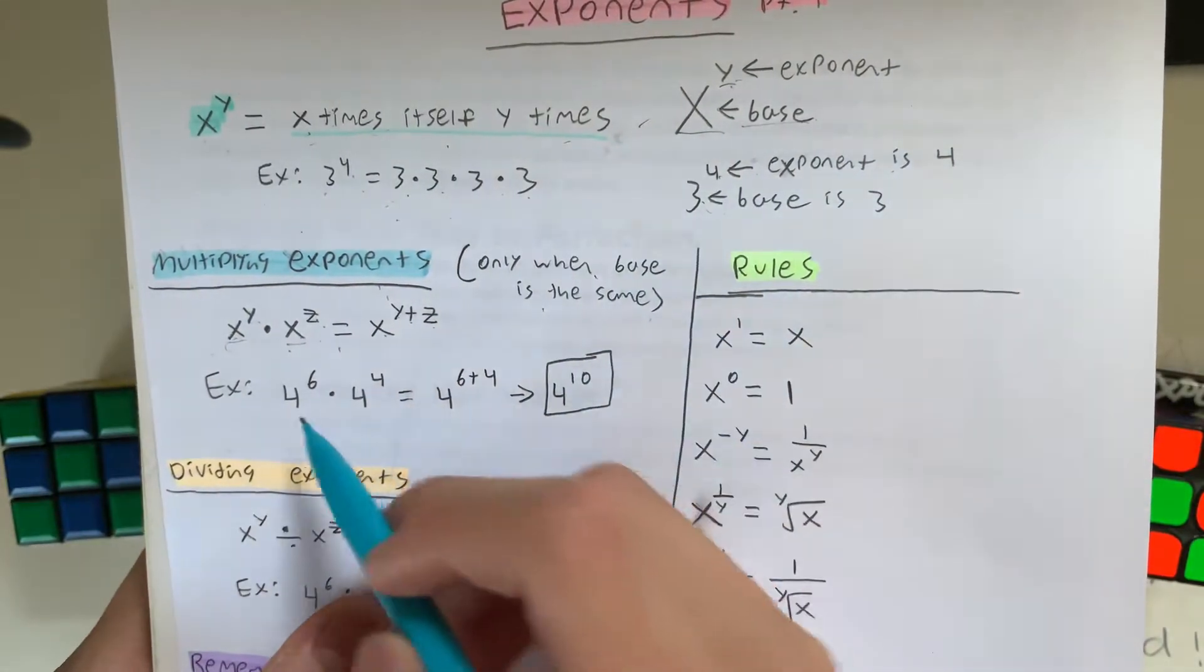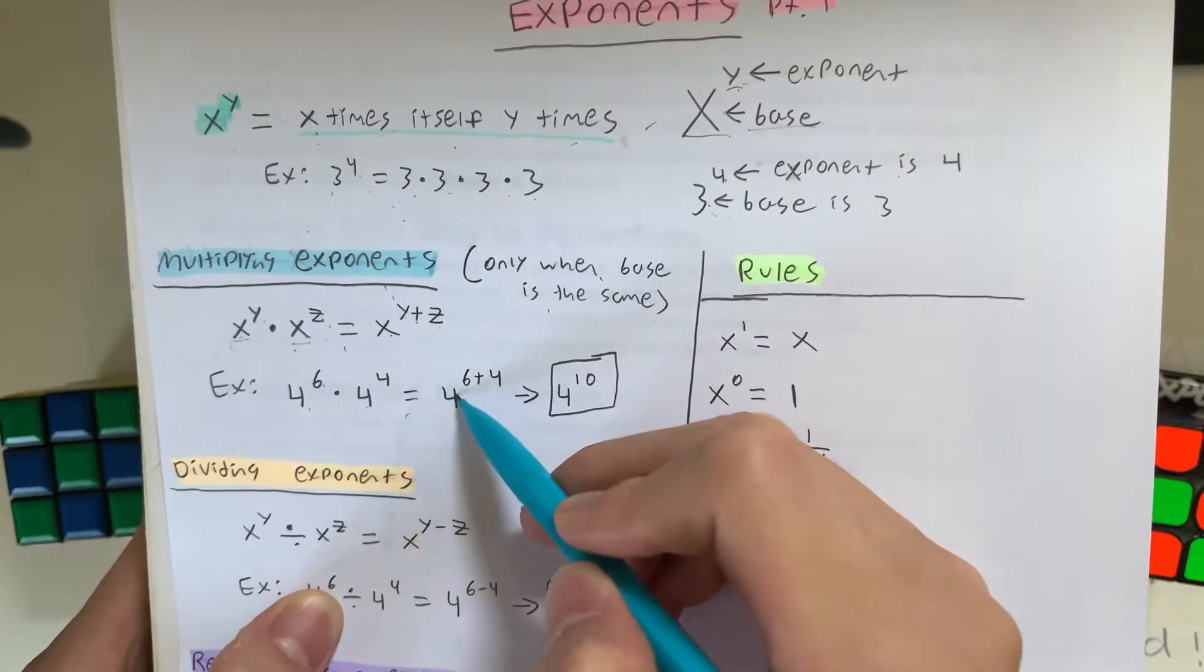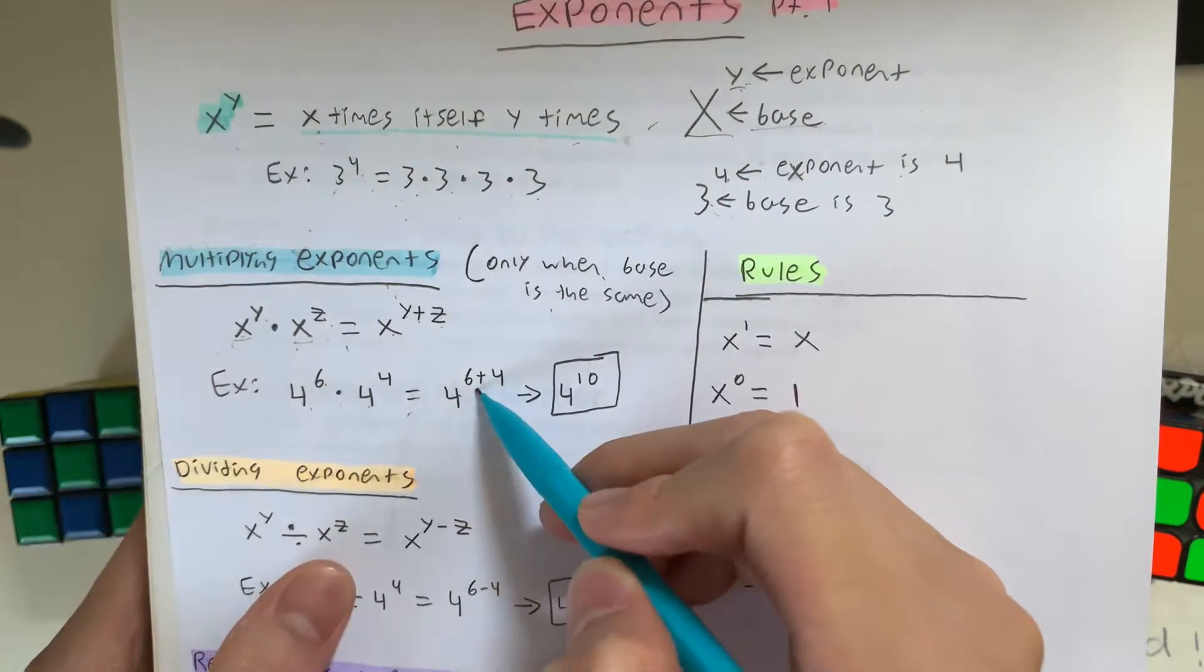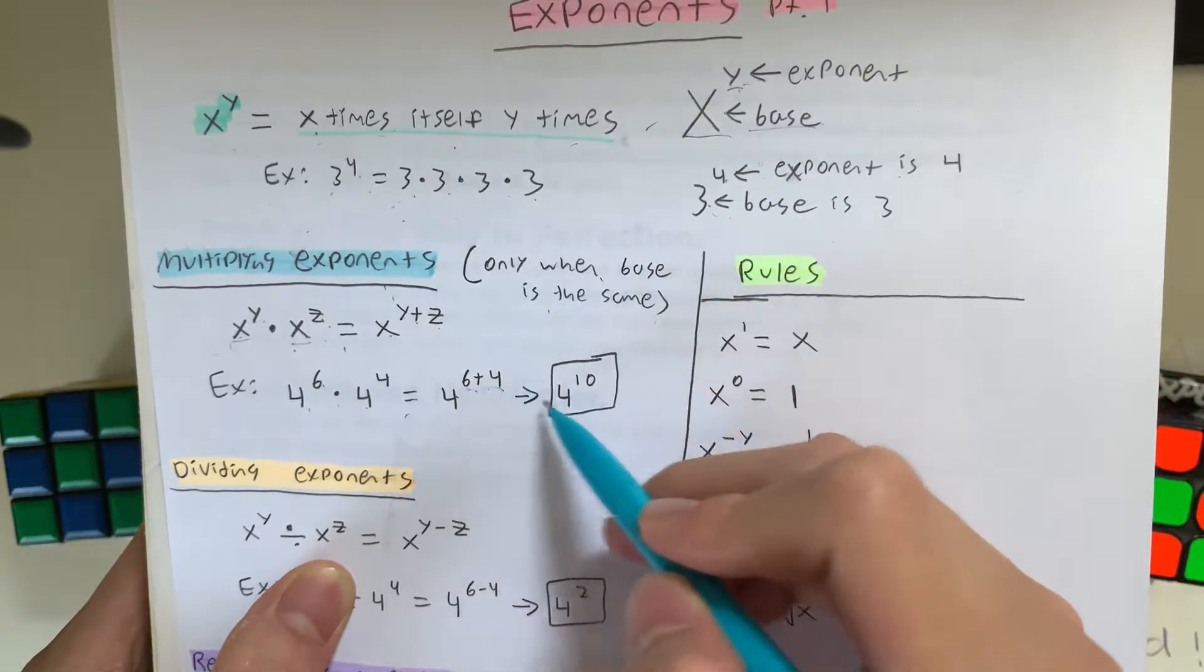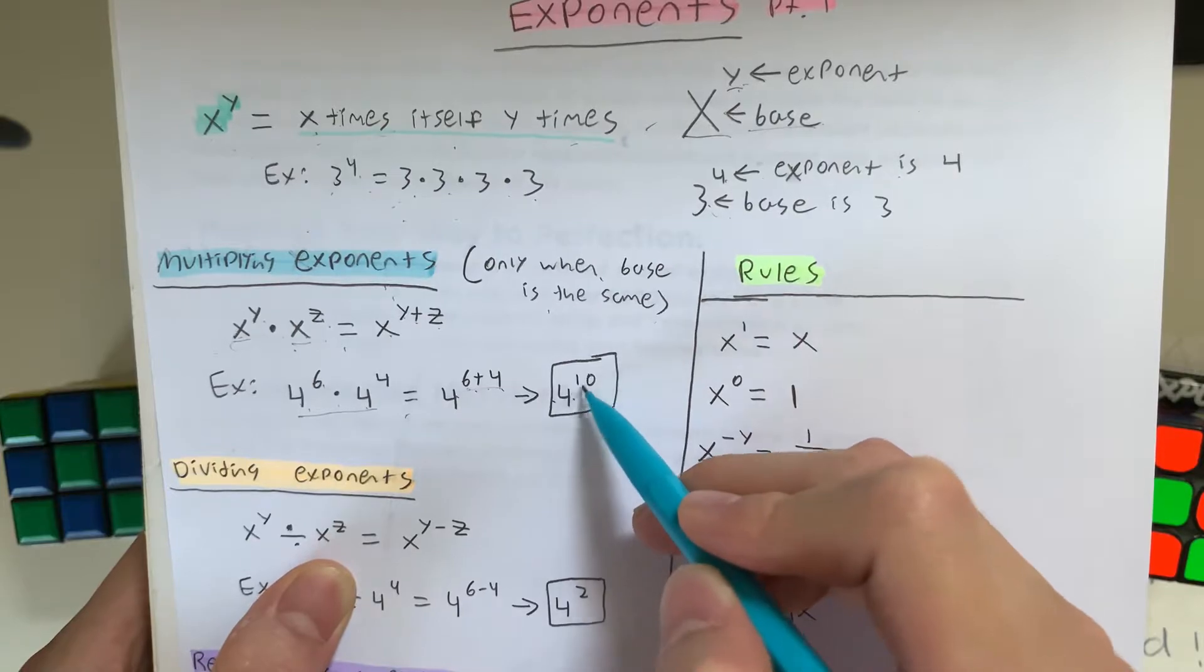So an example is, what's 4 to the 6 times 4 to the 4? It's equal to 4 to the 6 plus 4, and 6 plus 4 is 10, so this is equivalent to 4 to the 10th power.